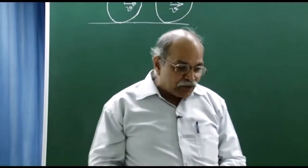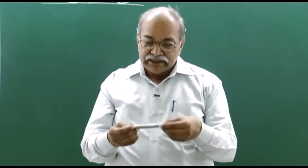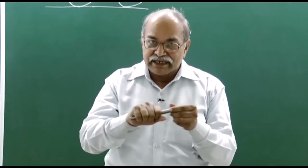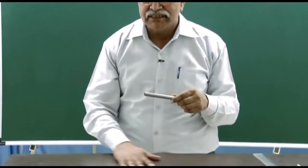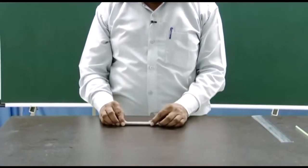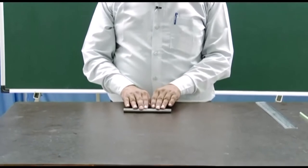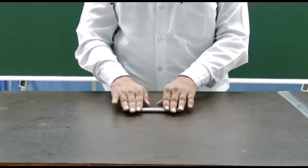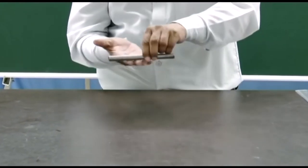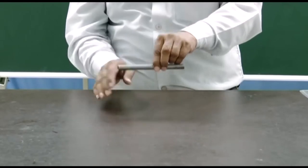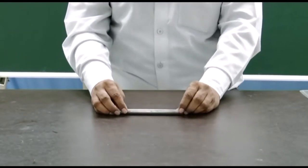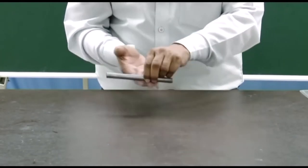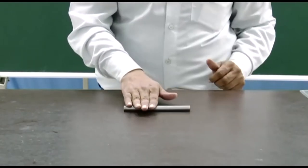Now let us do an experiment on rolling. I have a cylindrical tube. This surface is cylindrical and the table surface is horizontal and flat. I can roll this tube so that there is no slipping between the table surface and the surface of the tube in contact. It does not rub — it gently goes and the lower portion remains at rest. This is rolling.